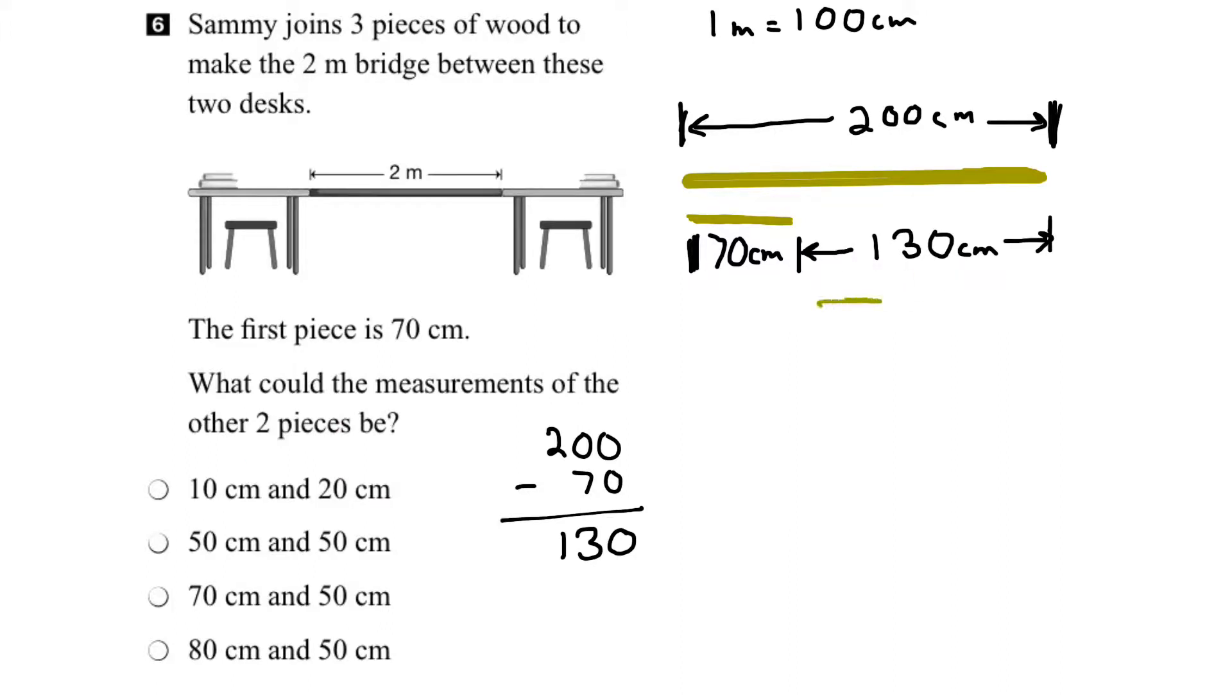So let's draw in the other two pieces of wood. We could have one there. We could have one there. They may or may not be the same length. We don't know. We just know that they have to add up to 130 centimeters. So let's take a look at our list of options to see if any of these pairs add up to 130.